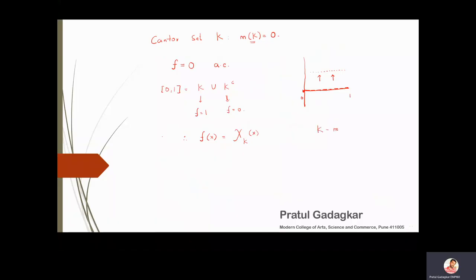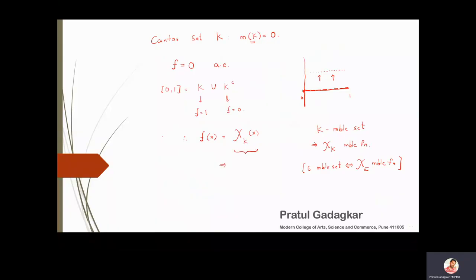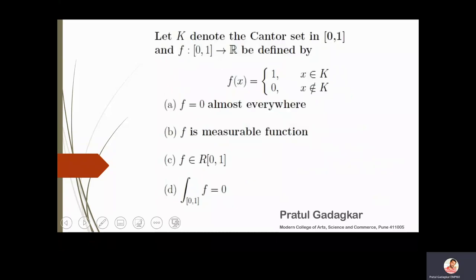K is a measurable set. We use the result that if E is a measurable set, then χ_E is also a measurable function — and the converse is also true. Since K is measurable, χ_K is a measurable function, and therefore f is also a measurable function. This confirms the first two options are correct.